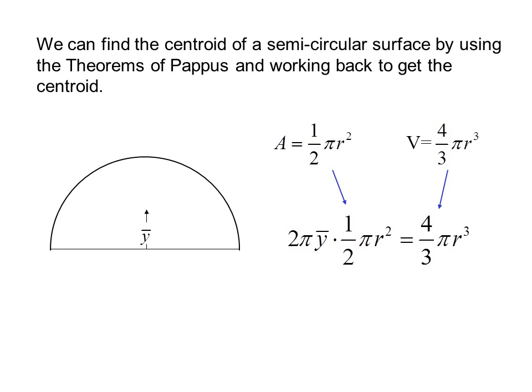Using the theorem of Pappus, then the volume is 2π times the distance to the centroid times the area, which is one-half πr², and that would have to be equal to four-thirds πr³. Solving this, we get ȳ equals 4r over 3π.